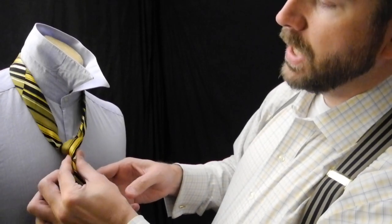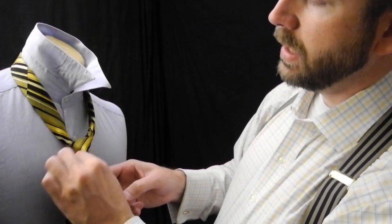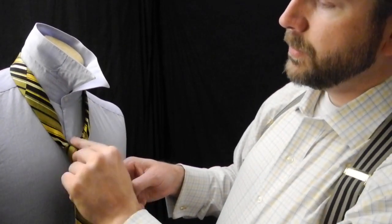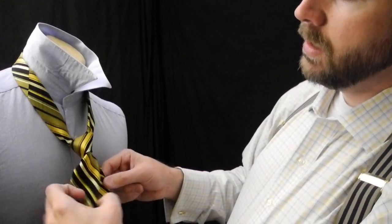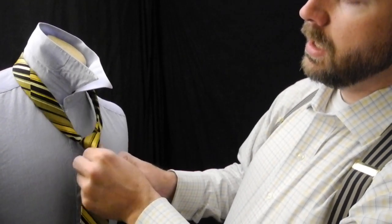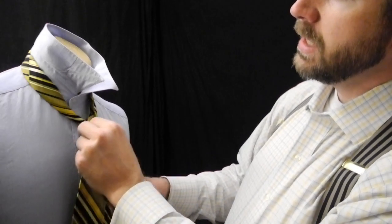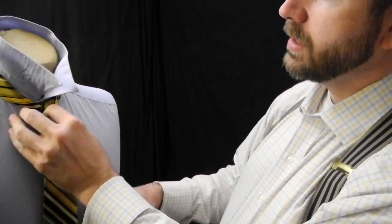I can pinch that bottom in, give it a nice neat triangle, and I cinch that up to the button. I'm going to pull down on the narrow end, gently holding the knot and moving side to side to help slide that fabric across the neck.